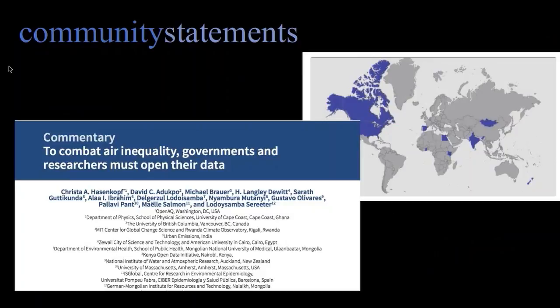I've given quite a few examples of what our community is doing with data, but I also want to emphasize that we don't just make data accessible and stop. We're also a community that wants to make a statement about the importance of governments making their data truly open. Last month, 12 of us from 10 countries came together to write a commentary in the Clean Air Journal — an open access South African journal. There's a huge data dearth in most of Africa, and we came together not just calling for more open data, but describing what that actually means and what we can provide as a community to help make it happen.